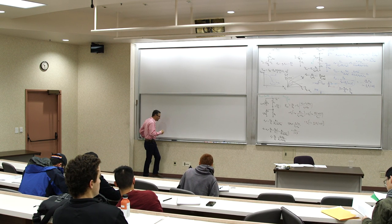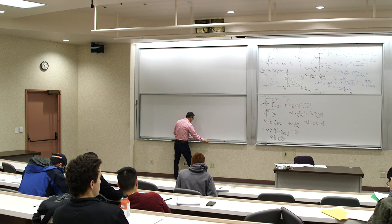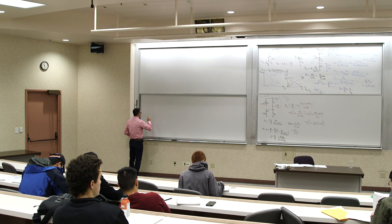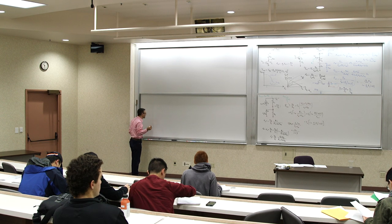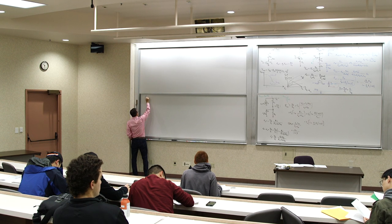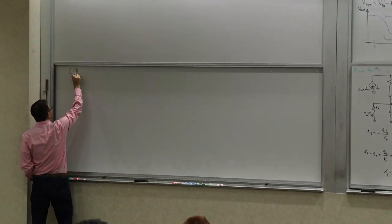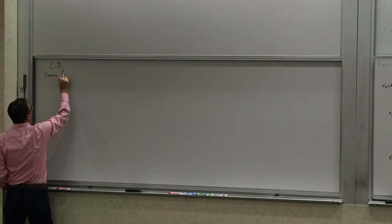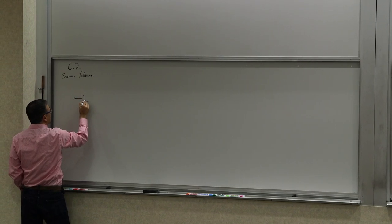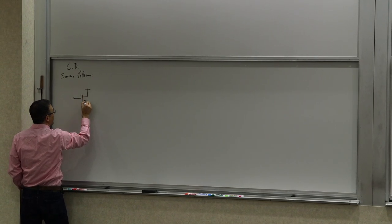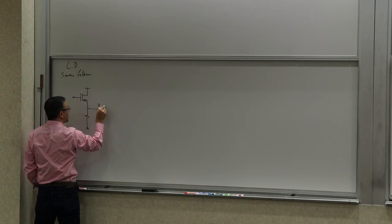There are two more blocks for the MOSFET to think about. The next block is the counterpart of what we call the emitter follower or common collector — this would be common drain, or source follower. This stage is one where the input is applied to the gate and the output is taken from the source. So this is V_out and this is V_in. The device has a W over L and there is some R_S.